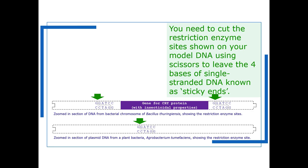You're going to model this process by cutting the restriction enzyme sites on the model DNA using scissors, leaving those four base pair single-stranded DNA overhangs which are known as sticky ends.